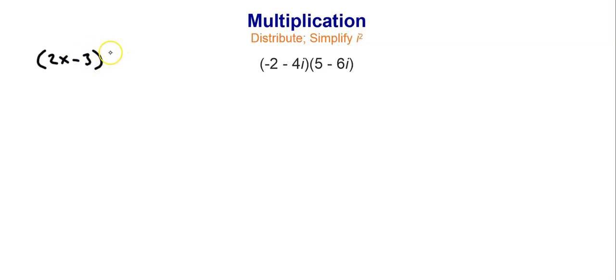Let's take it up one more notch. In Algebra 1, we often multiplied a binomial like 2x minus 3 times another binomial like x minus 7, distributing twice — first 2x to everything in the parentheses, then negative 3 to everything. When you have a complex number times a complex number, you do the same process. For example, I have negative 2 minus 4i times 5 minus 6i. I'll take negative 2 and give it to the 5: negative 2 times 5 is negative 10. Then negative 2 times negative 6i is positive 12i.